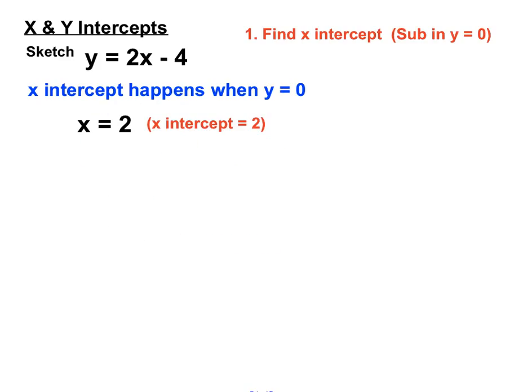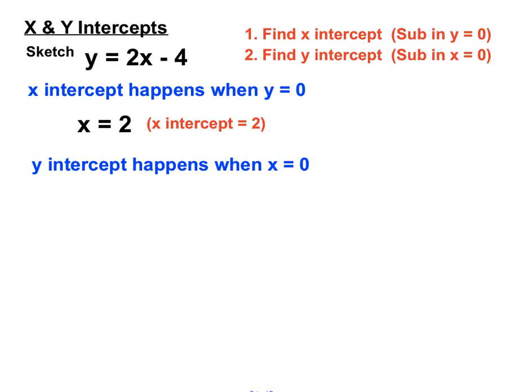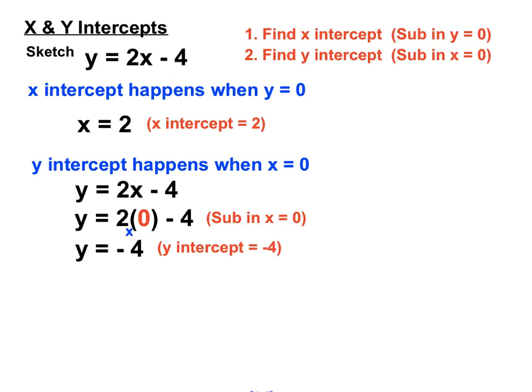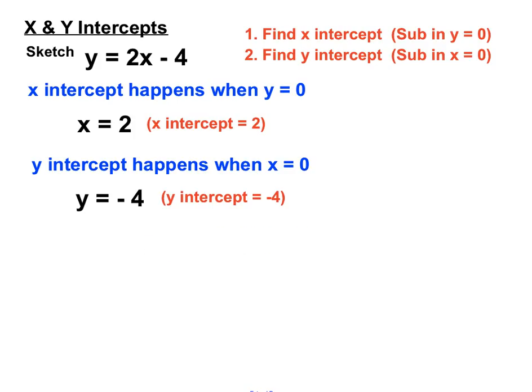Okay, we found the X intercept. Now to find the Y intercept as step 2 here, we sub in X = 0 this time. So the Y intercept happens when X = 0. So we've got our rule here. If we replace the X with a 0, 2 lots of 0 is 0, minus 4 is minus 4. So we have y = -4, and that's our Y intercept. So pretty quick to find the X intercept and the Y intercept—we're just subbing in y = 0 to find the X intercept and X = 0 to find the Y intercept. Pretty straightforward algebra there involved.